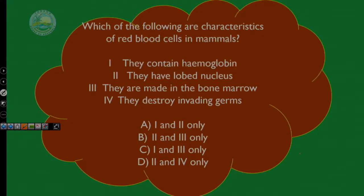Which of the following are characteristics of red blood cells in mammals? One, they contain hemoglobin. Two, they have a lobed nucleus. Three, they are made in the bone marrow. And four, they destroy invading germs. Let's go through them. Do they contain hemoglobin? Yes. Do they have a lobed nucleus? No, they have no nucleus. Are they made in the bone marrow? Yes. Do they destroy invading germs? No. So the answer must be one and three, which is option C.